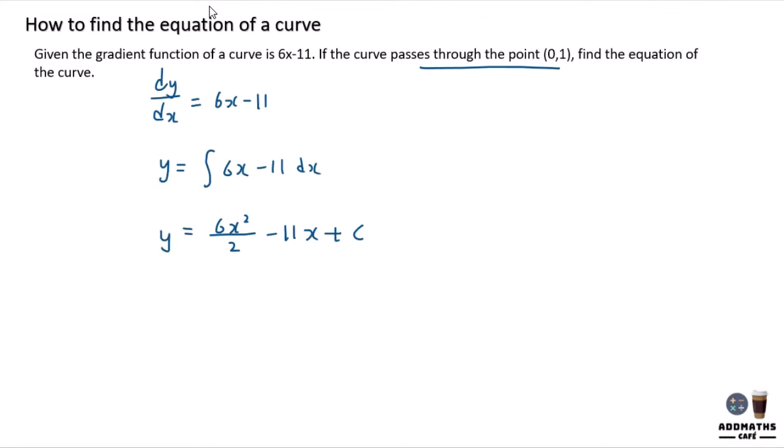But to find C, you have to apply the coordinate. This C will be your y-intercept, which is this. This is your y-intercept because x equals 0. So your y-intercept will be equal to 1.